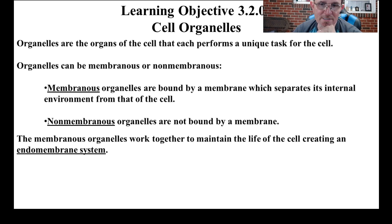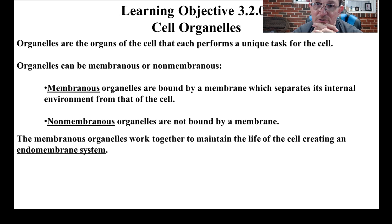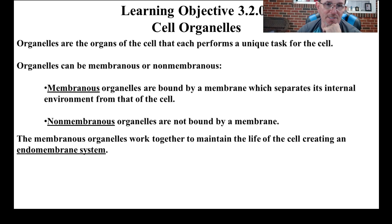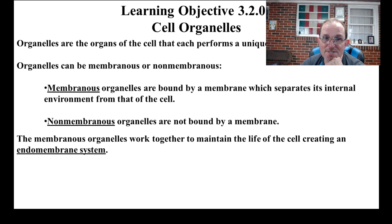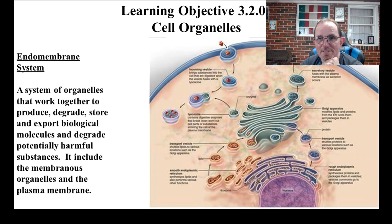Cell organelles — we have organelles that perform a special task for the cells, just like our organs do for our entire body. Membranous and non-membranous, we talked about that. The membranous organelles work together and we call that the endomembrane system. Endo means inside the cell membrane, and we're going to see how those things work together by passing things off.